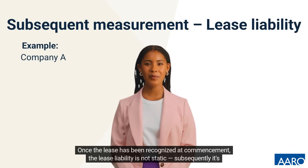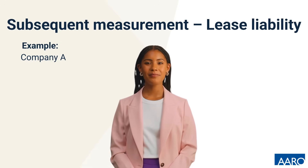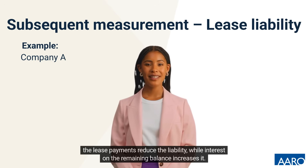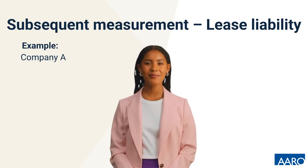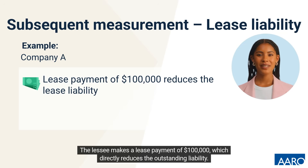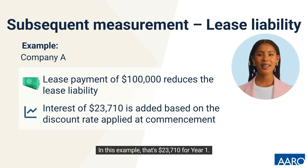Once the lease has been recognised at commencement, the lease liability is not static. Subsequently, it's measured by adjusting for changes over time. Each year, two important financial activities take place: lease payments reduce the liability, while interest on the remaining balance increases it. In the first year, the lessee makes a lease payment of $100,000, which directly reduces the outstanding liability. Meanwhile, interest is accreted on the lease liability using the discount rate applied at commencement — that's $23,710 for year one.